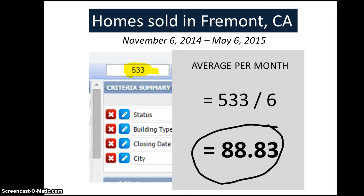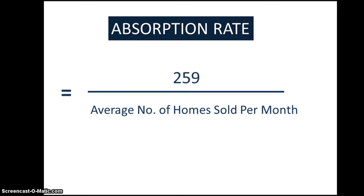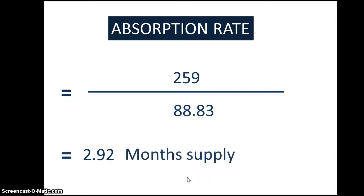Next, we are ready to calculate the absorption rate in Fremont. Let's go back to our formula. The number of active and pending listings is 259, and this is divided by the average number of homes sold per month, which is 88.83. And the result is 2.92. This is our absorption rate. So we can say that the housing supply of detached family homes in Fremont is tight, with the current inventory expected to run out in 2.92 months.